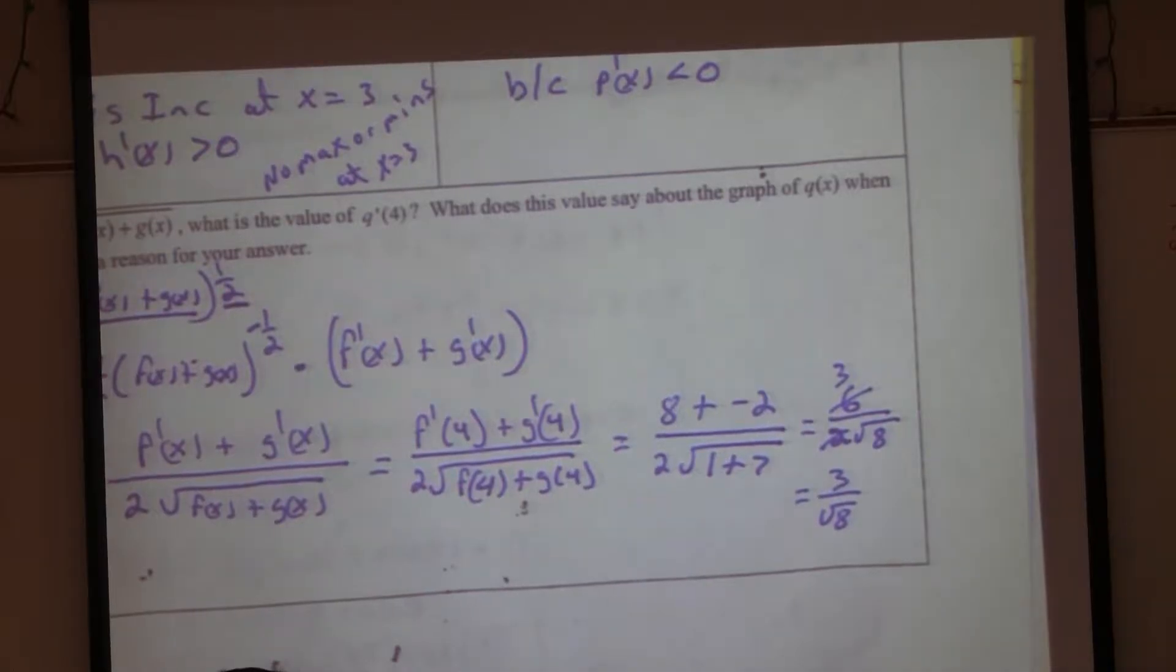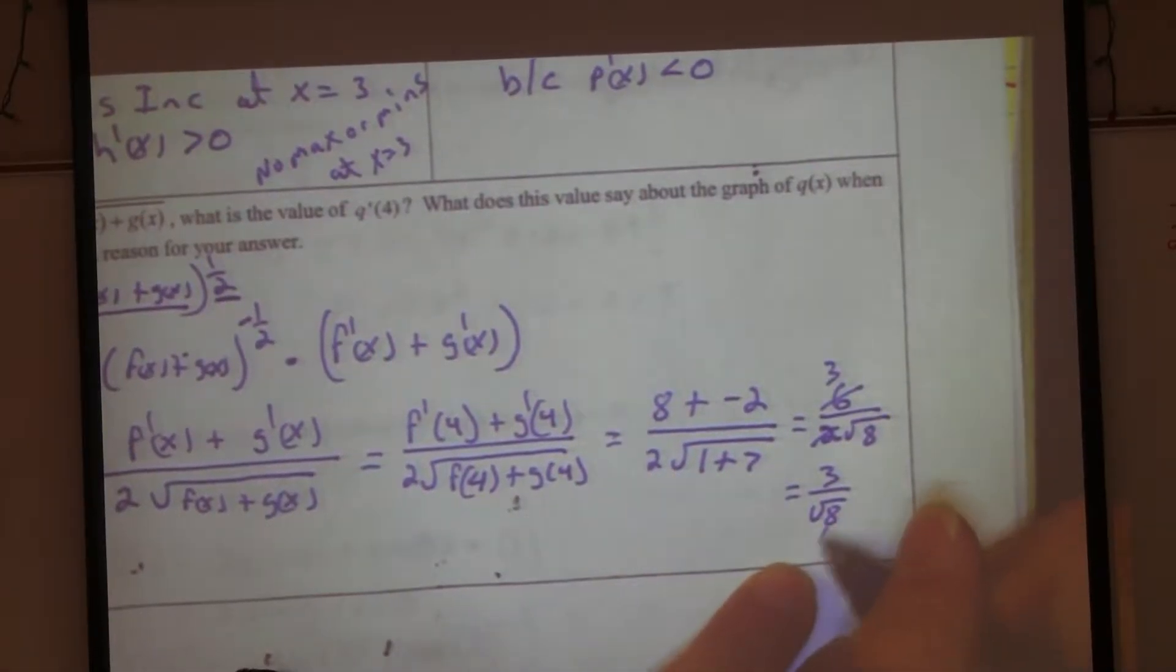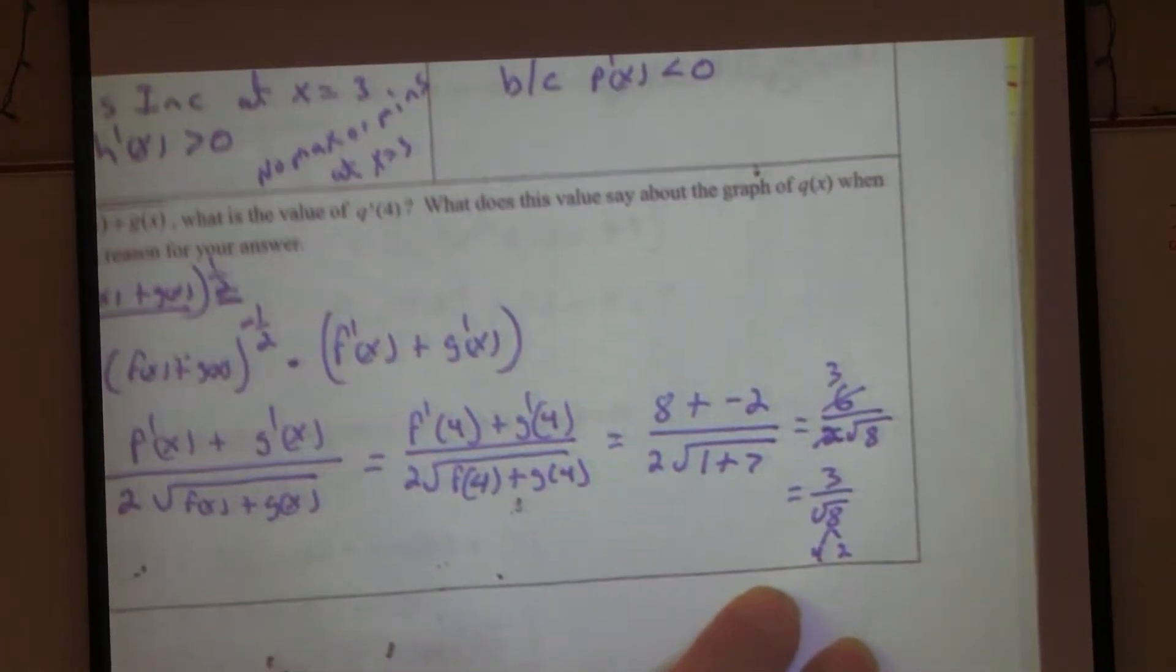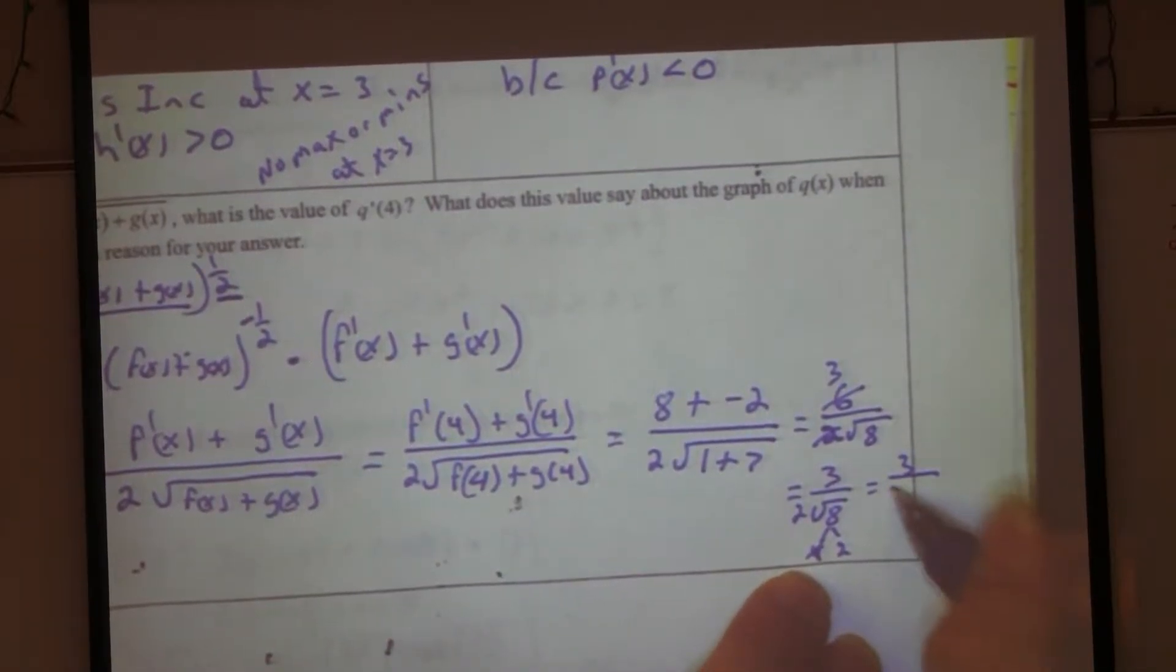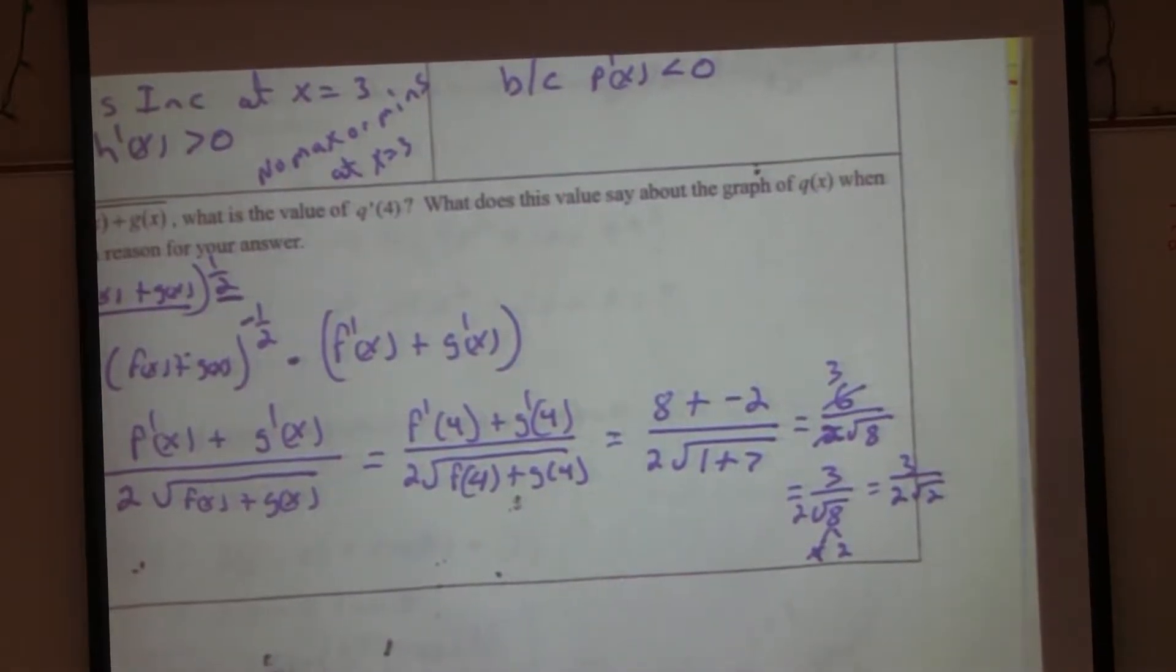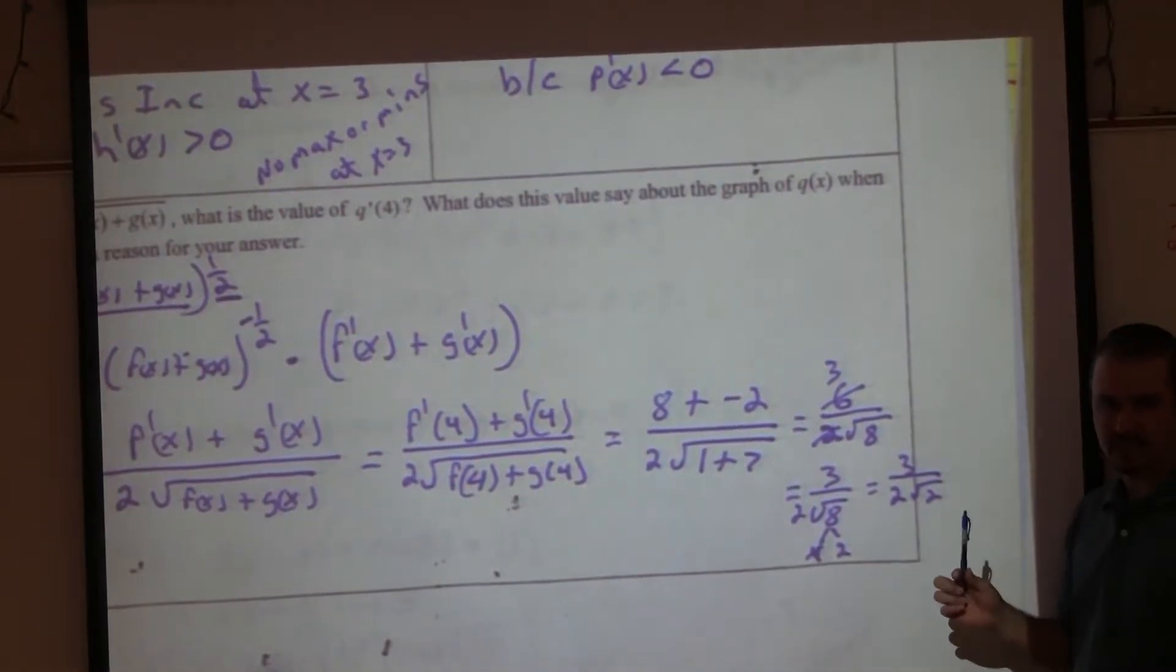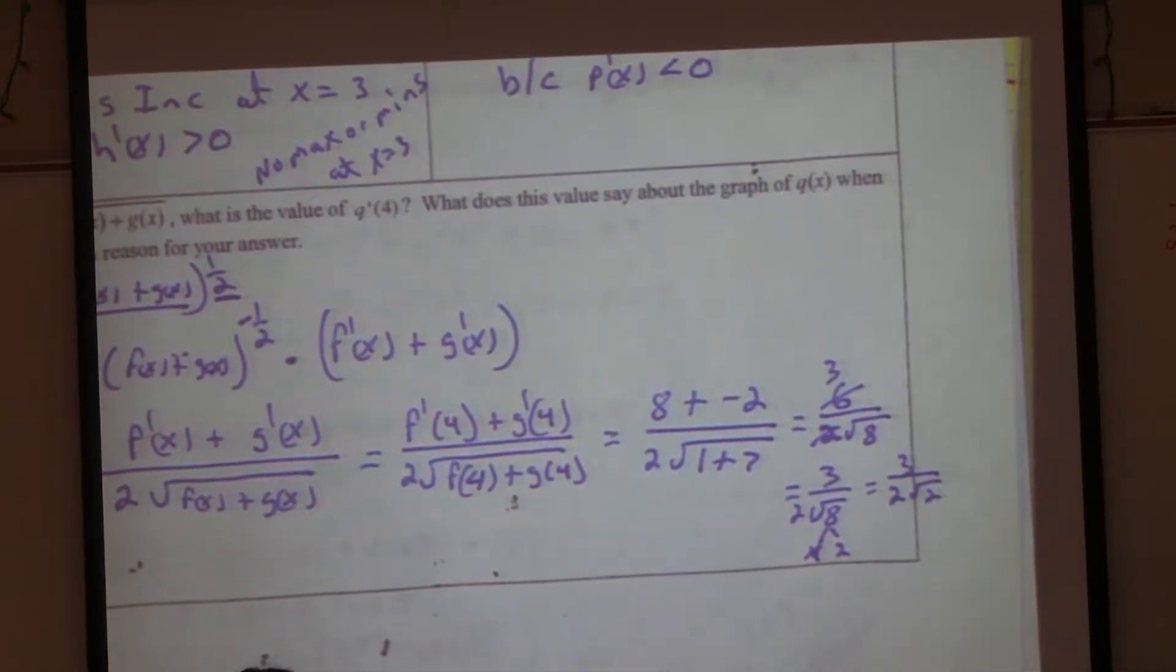Okay, let's practice simplifying radicals. So how can I rewrite radical 8? 4 times 2, right? What's the square root of 4? 2. So we took it out. So really, I have 3 over 2 radical 2. And then sometimes we don't like radicals in the denominator, so we can rationalize. But that's okay. I'm not going to make you. This is good. Okay? Alright.